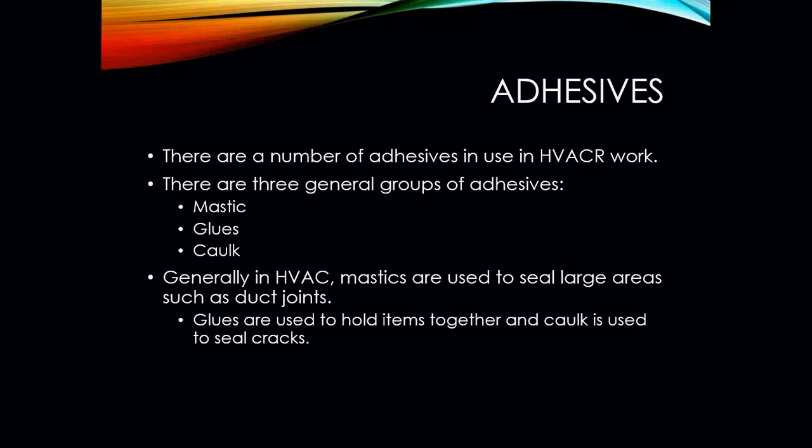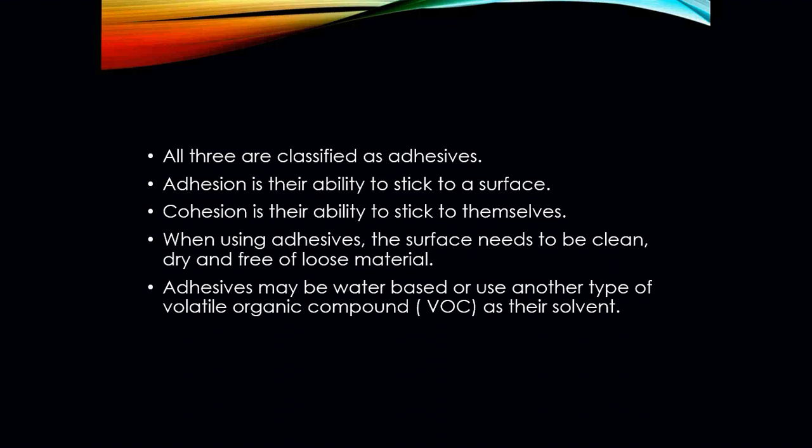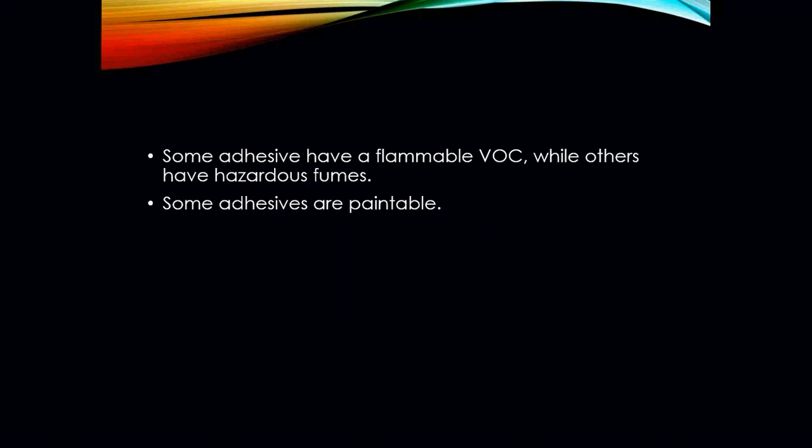Other adhesives you're going to run into in HVAC work are mastic, glues, and caulks. Generally, HVAC mastic is used to seal large areas such as duct joints. Glues are used to hold items together and caulks are for sealing cracks. All three are classified as adhesives — adhesion is their ability to stick to a surface, and cohesion is their ability to stick to themselves. When using adhesives, the surface needs to be clean, dry, and free of loose material. Adhesives may be water-based or use volatile organic compounds as solvents; some have flammable VOCs, others have hazardous fumes, and some are paintable.